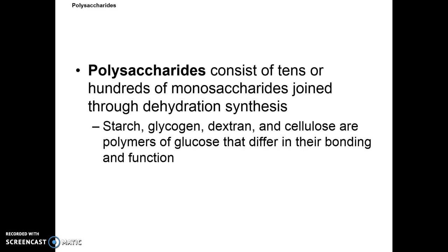Polysaccharides consist of tens or hundreds of monosaccharides joined through dehydration. So we're looking at things like starch, glycogen, dextran, and cellulose. These are all different structural sugars that are polymers of glucose that differ in their bonding.